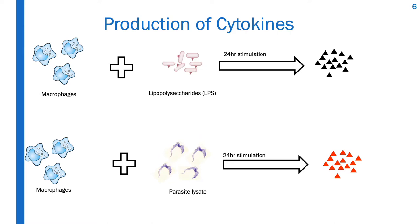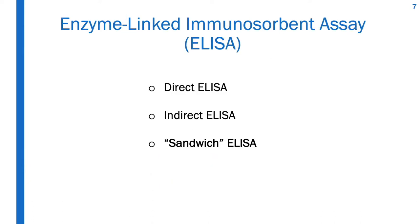In this video, we will use lipopolysaccharides, popularly known as LPS, to stimulate macrophages for 24 hours. LPS are endotoxins which are found in the outer membrane of gram-negative bacteria. We will also use trypanosome parasite lysates to stimulate macrophages. Because the amount of cytokine production depends on the concentration of the stimulants, we will use these two stimulants in different concentrations.